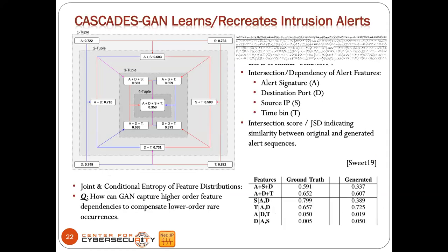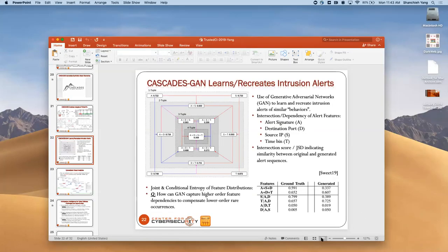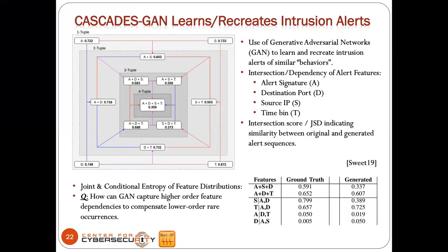More recently, because of all this experience analyzing intrusion alerts, we started asking: why couldn't we learn them well? A student started exploring the use of generative adversarial networks to learn and recreate intrusion alerts — recreating scenarios, not even extrapolating. Can we use GANs for this purpose? GANs have shown good results for images and other tasks. We selected four specific features: signature, destination port number, source IP, and the time an alert happens.